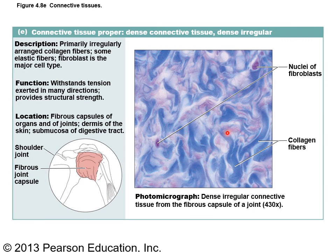Dense irregular connective tissue looks swirly because the collagen fibers go in multiple directions. It's found in joint capsules, but importantly you'll find dense irregular connective tissue in the dermis of the skin, which leads right into what we'll discuss in the next chapter.